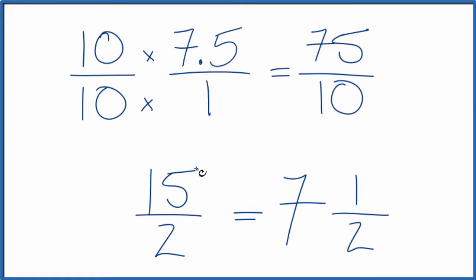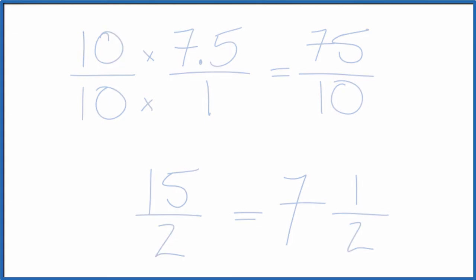Both 7 and 1 half, 15 over 2, and even 75 over 10, they are equal to 7.5, just they're written as fractions. This is Dr. B, and thanks for watching.